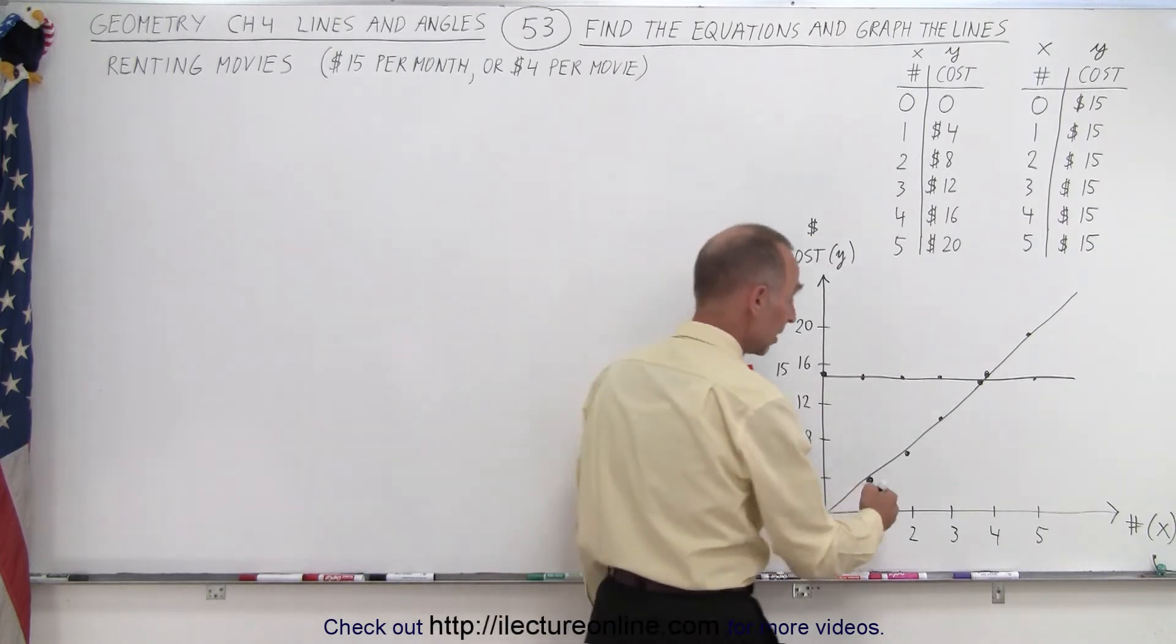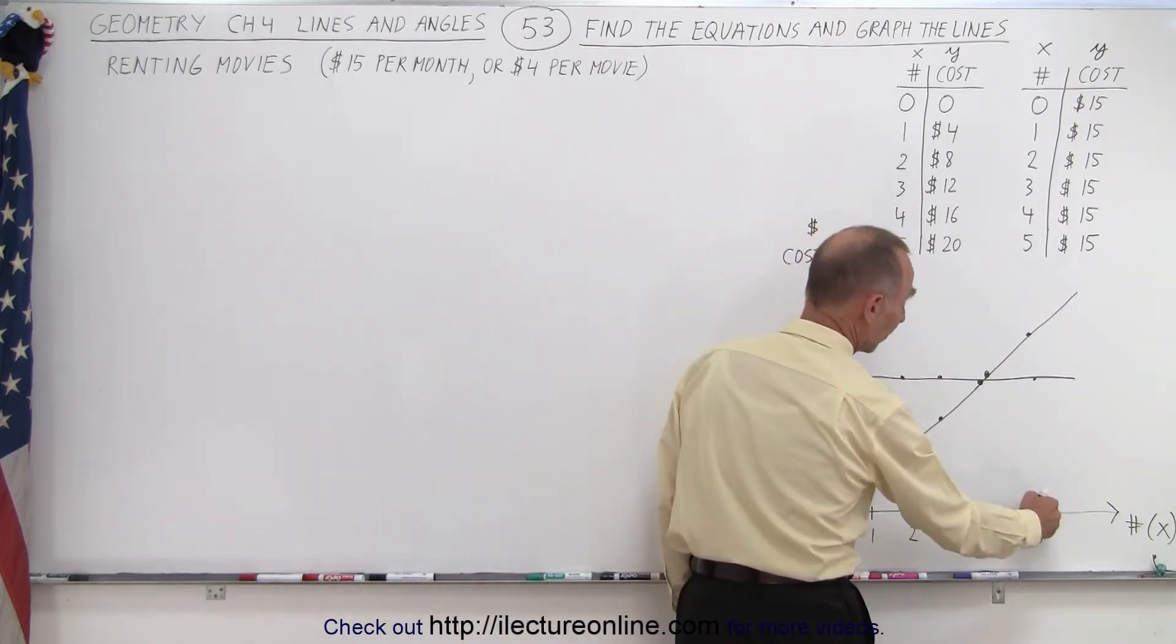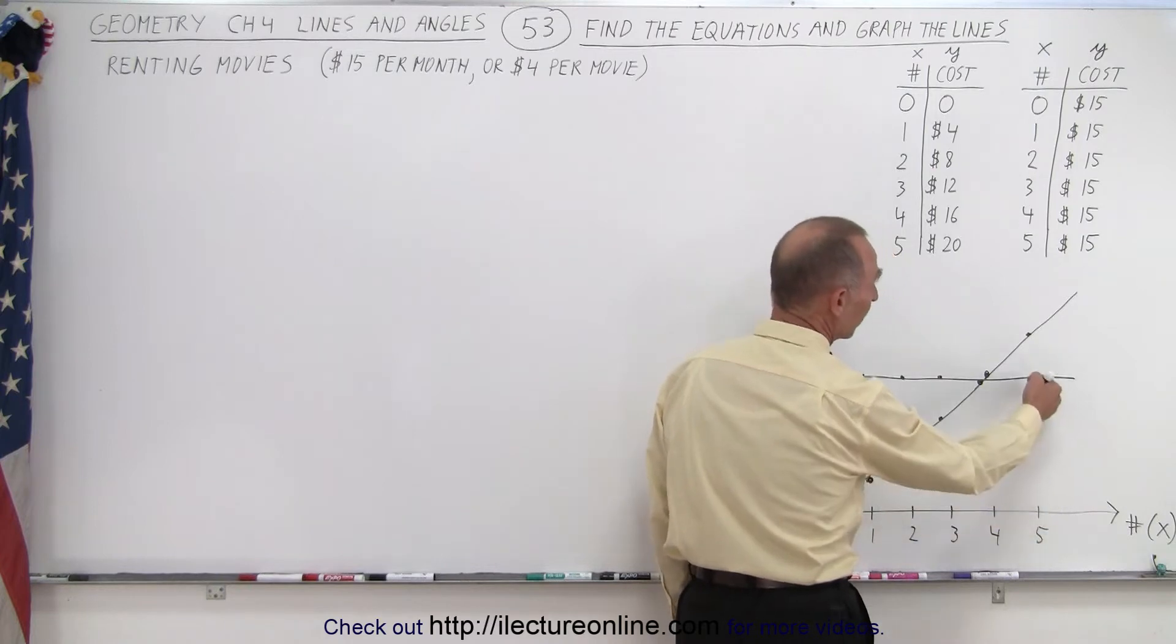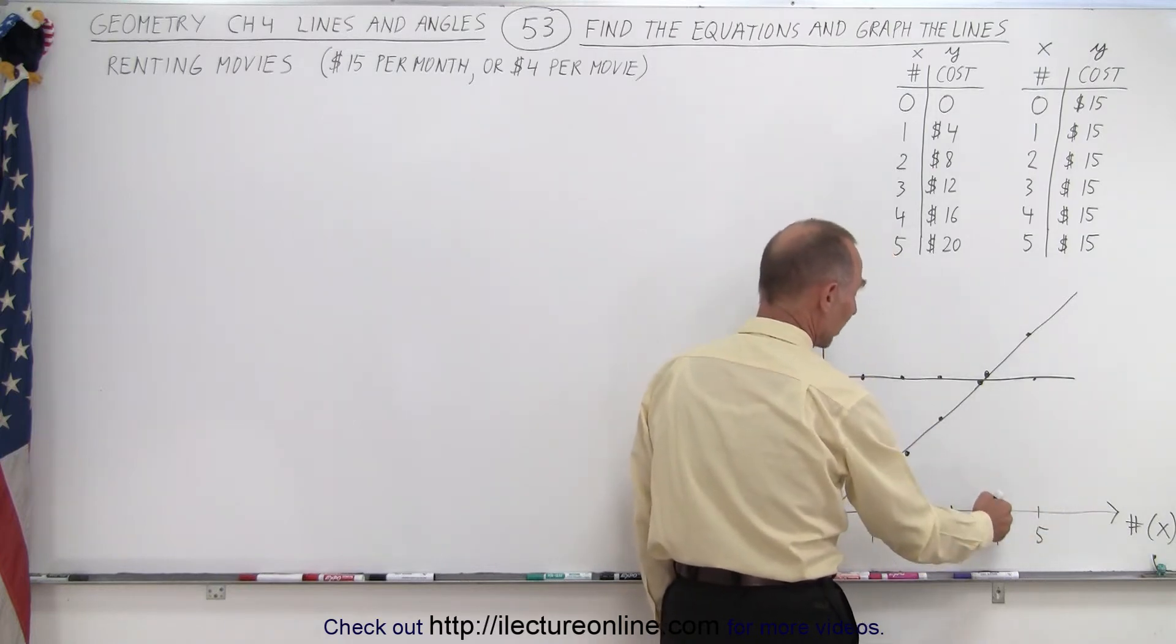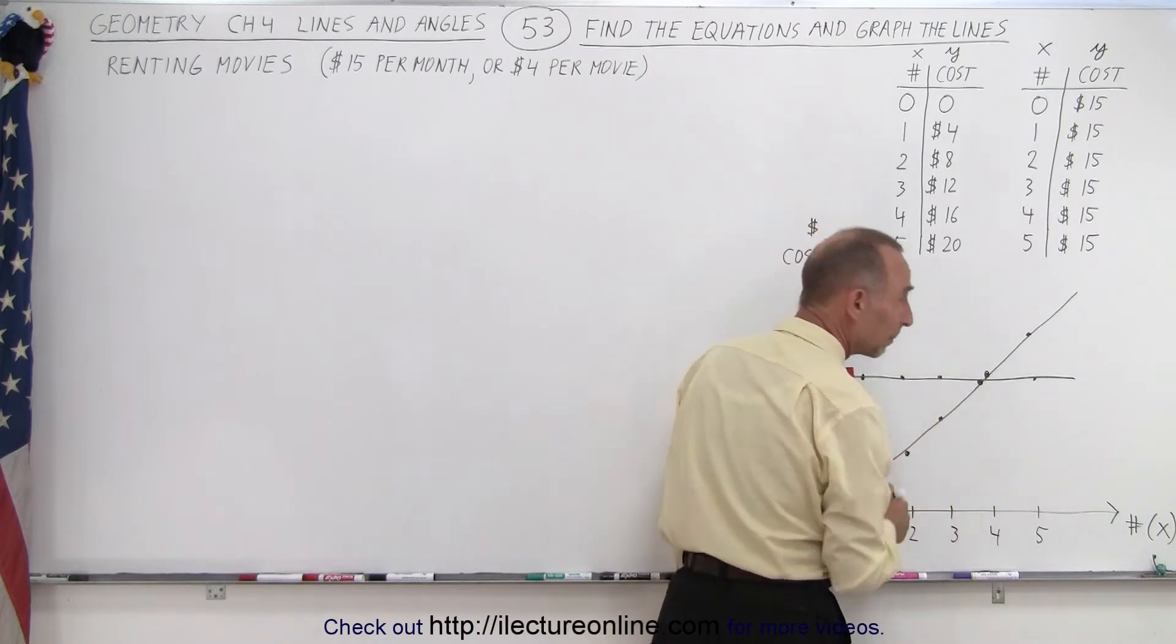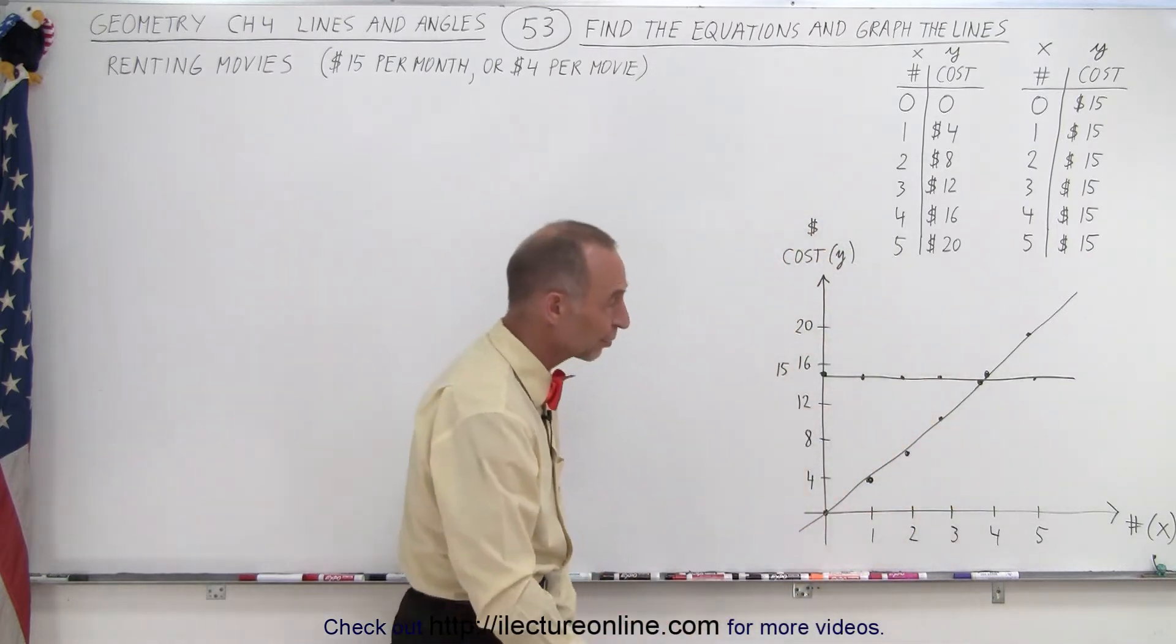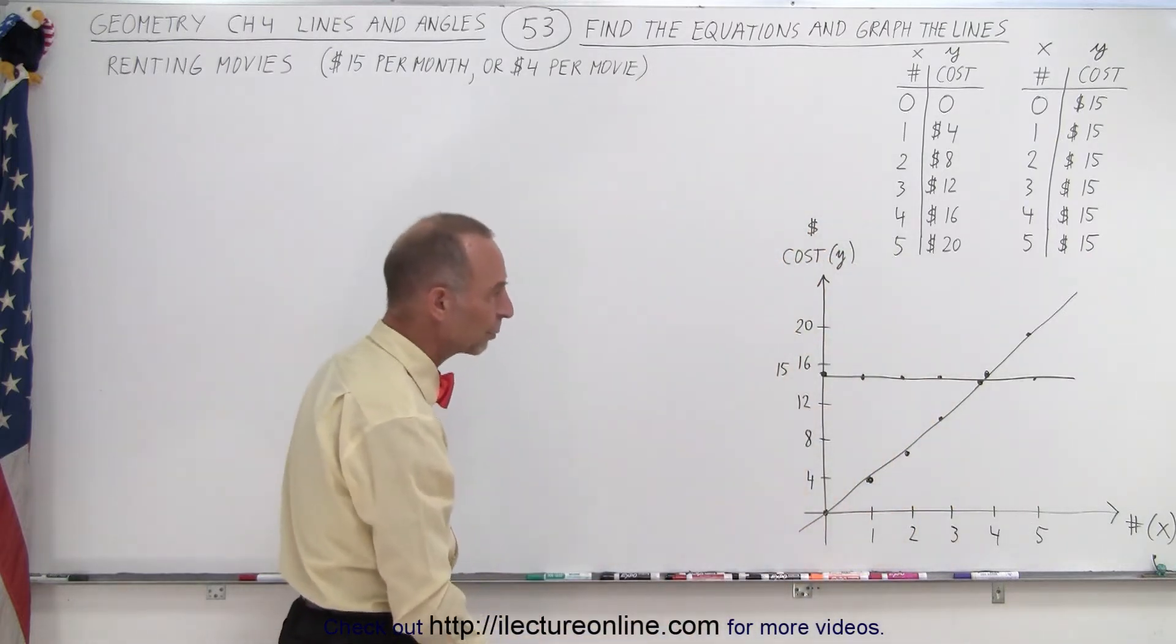At some point, you can see that if you're going to rent four or more movies, it's cheaper just to pay by the month. If you're going to rent less than four movies per month, you want to pay per movie and not pay the fifteen dollars per month. So that's what that kind of graphically represents.